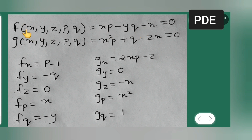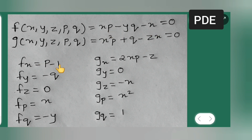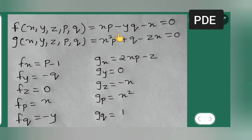Now differentiate f with respect to x: fx equals p minus 1. Differentiate f with respect to y: fy equals minus q. Differentiate f with respect to z: fz equals zero, since there is no z term. Differentiate f with respect to p: fp equals x. Differentiate f with respect to q: fq equals minus y.